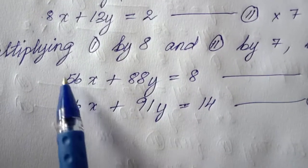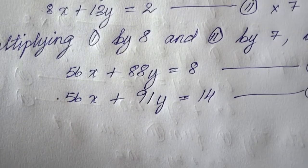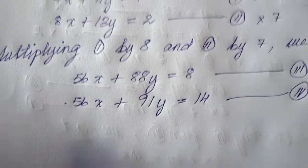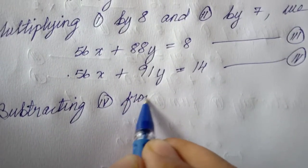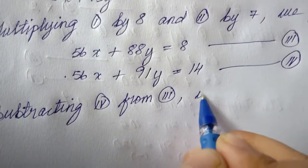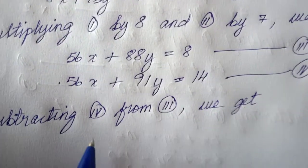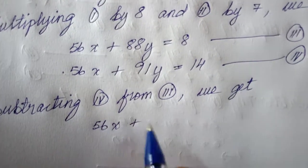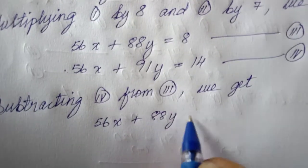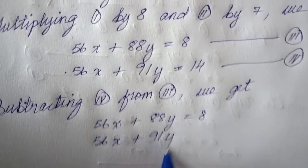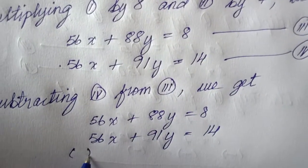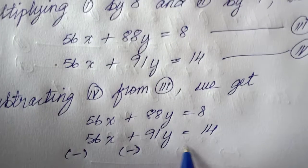The x variable is the same in both equations and both are positive, so I need to use subtraction. Subtracting equation 4 from equation 3: 56x plus 88y equal to 8, minus 56x plus 91y equal to 14. Since it is subtraction, I have to change all the signs to the opposite.